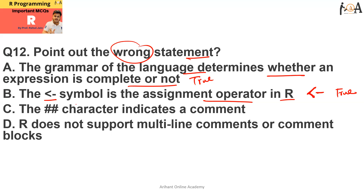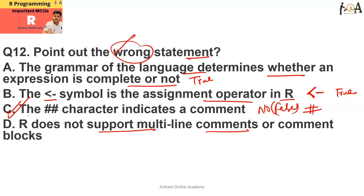Option C — double hash character indicates a comment — is false, because in R we only use a single hash for comments, and multi-line comments are not supported in R programming. Option D — R does not support multi-line comments — is true. So option C is the wrong statement and is the correct answer here.